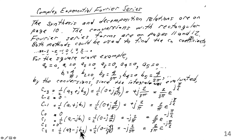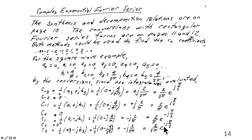c3 would be (a3 minus j·b3). b3 again is 4 over 3 pi, but the formula changes the sign, so we get minus j times 2 over 3 pi. The magnitude of the complex number is 2 over 3 pi, and the phase for minus j is e to the minus j pi over 2. These are the coefficients of the complex exponential Fourier series, found by evaluating the rectangular and then doing a conversion.